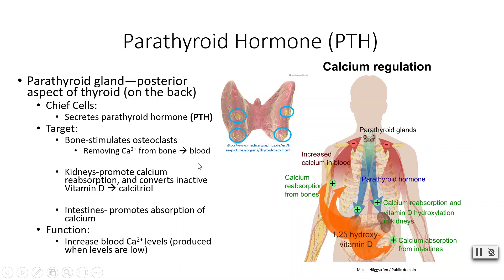There are additional ways PTH increases blood calcium. It stimulates the kidneys to promote more calcium reabsorption and to convert inactive vitamin D into the active form calcitriol, which is required for calcium absorption. Parathyroid hormone also targets the intestines to promote calcium absorption, all working to increase blood calcium levels.